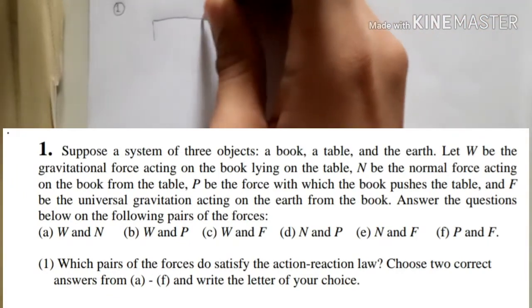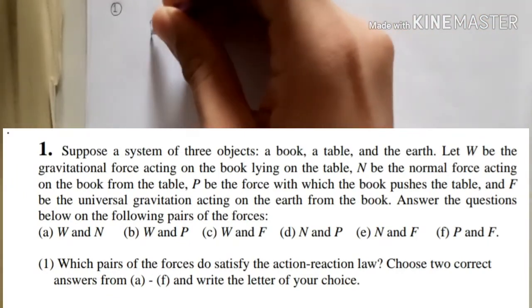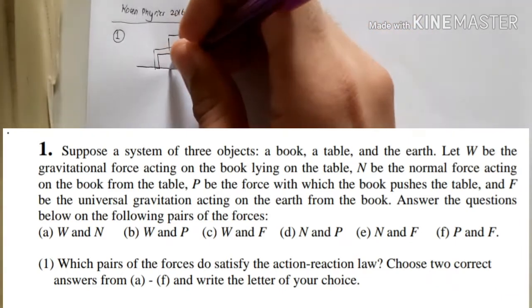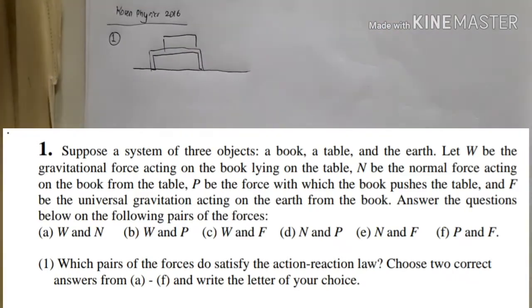So there's a book, there's a table, and there's the ground which represents the earth. Let W be the gravitational force acting on the book lying on the table, N be the normal force acting on the book from the table, P be the force with which the book pushes the table, and F be the universal gravitation acting on the earth from the book. Answer the questions below on the following pairs of the forces.